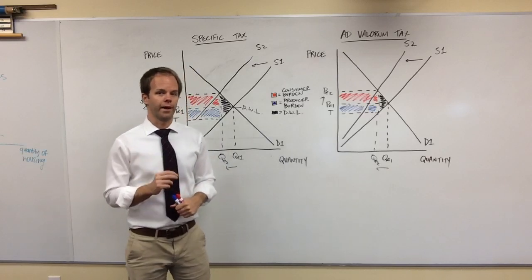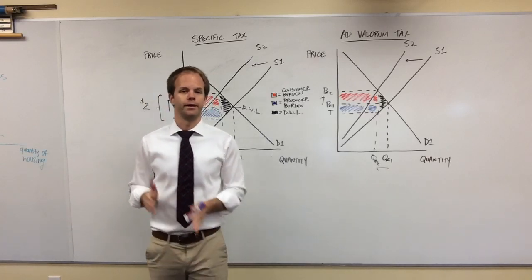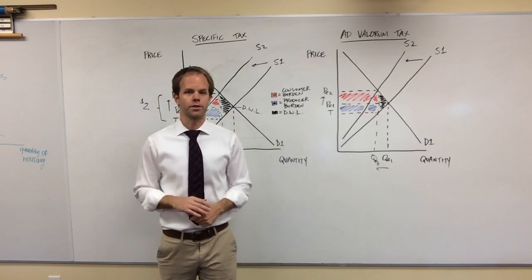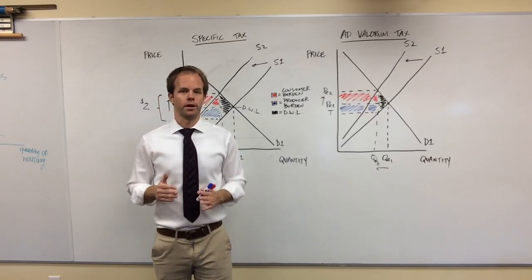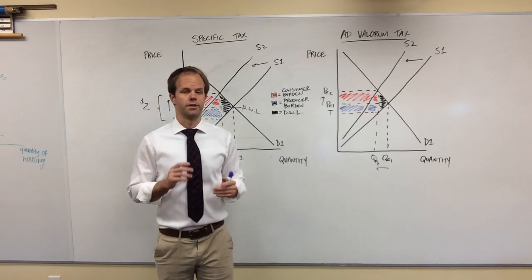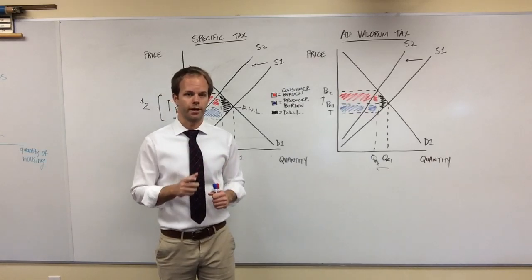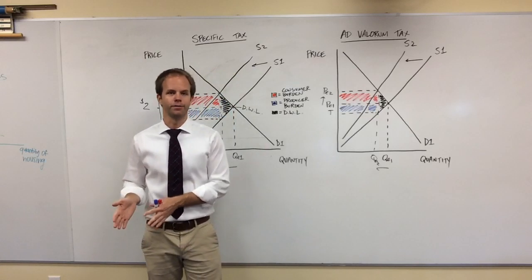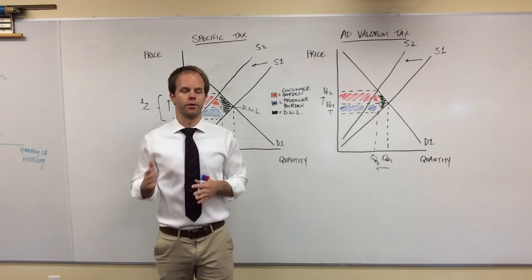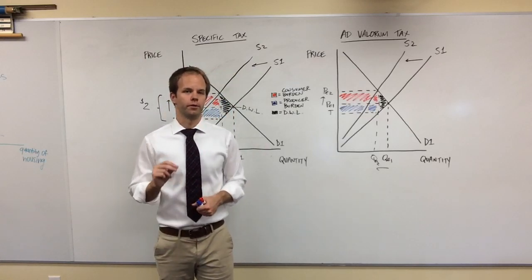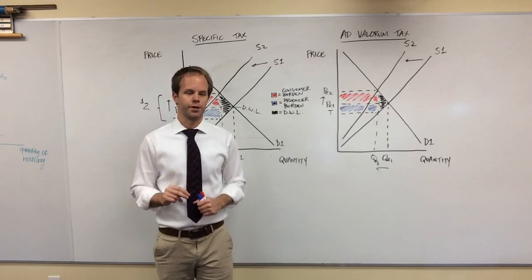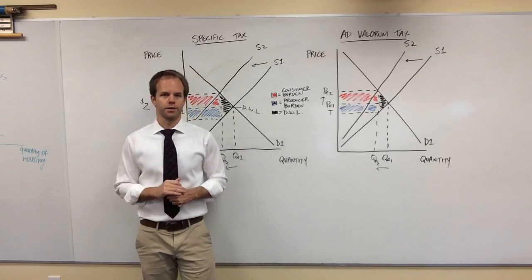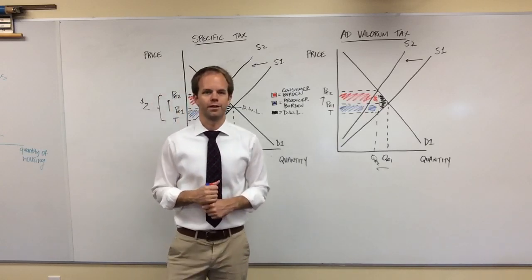So a lot of really good internal assessments are based on an article about indirect taxes. A really good point to help you do some analysis is to make the distinction between these two types and think about what implication does that have in the context of your article. That would be really good for criterion C, which is application and analysis. All right. Thanks guys.